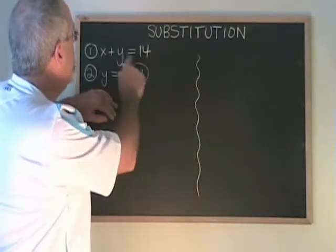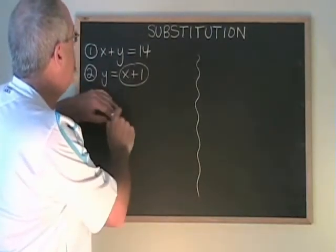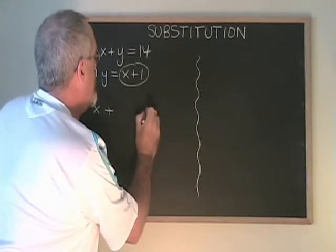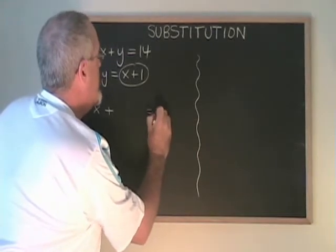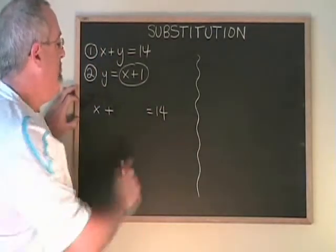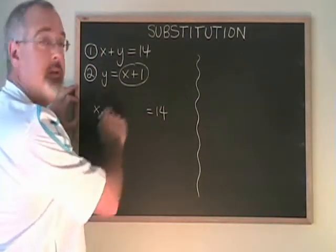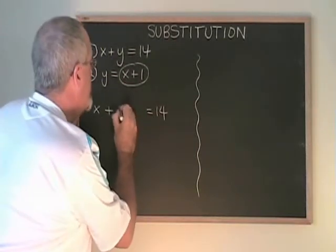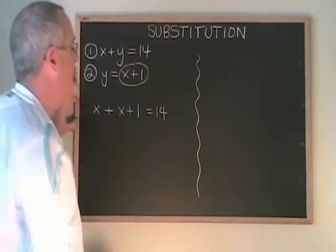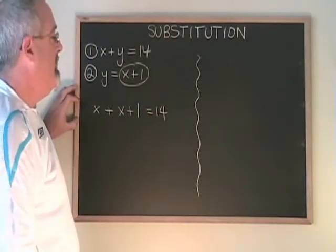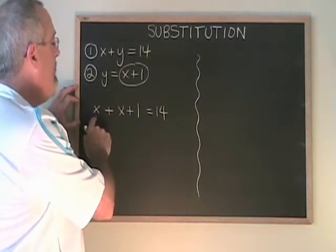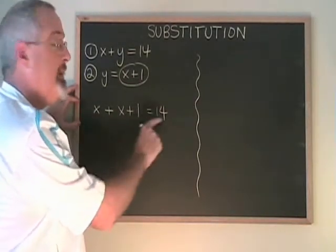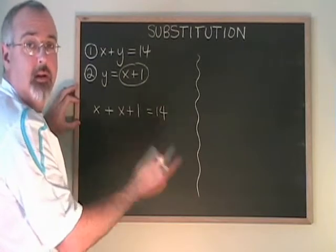So we can rewrite the first equation, x plus y equals 14, except instead of the y, we leave a space and we put x plus 1 into that space. Now we simplify. We have an equation with only x's, and we can solve that.